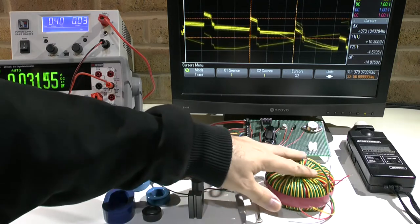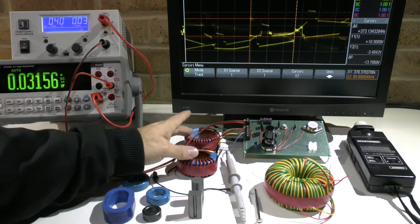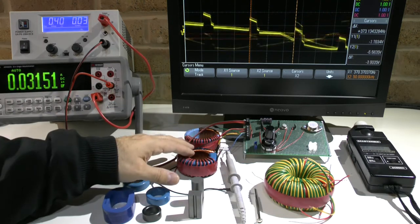So this one has a larger coil set here, so the voltage will be a little bit higher. Both coil sets on these two cores are identical.